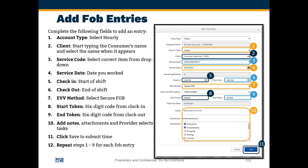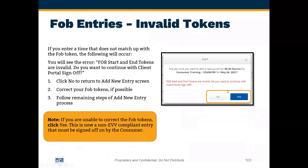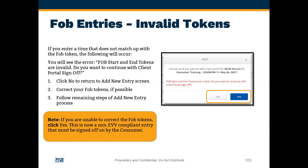Then add your notes, select any provider tasks that you completed, and click 'Save' in the bottom right corner. If you entered an incorrect FOB token, an error message will be displayed asking if you wish to continue. To correct the FOB token, select 'No' and it will bring you back and give you a chance to change the token you entered. If you are unable to correct the FOB token, simply click 'Yes,' and the entry will go in as a non-EVV compliant entry.